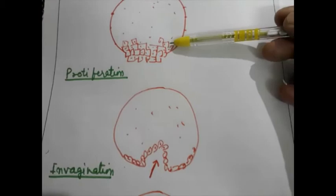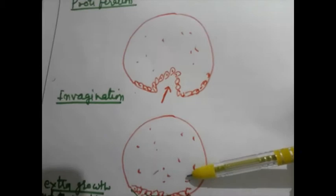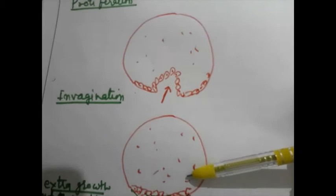Types of gastrulation include proliferation, invagination, and extra growth. This is extra growth.